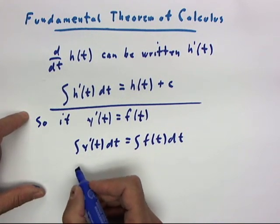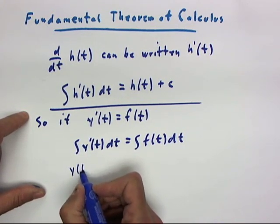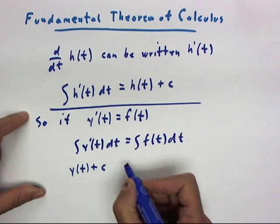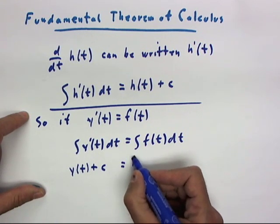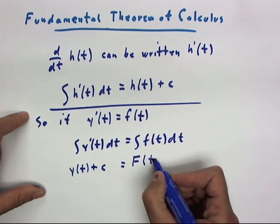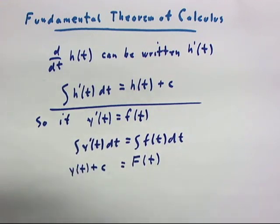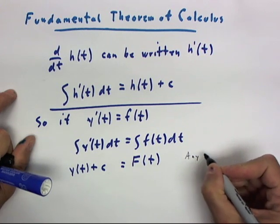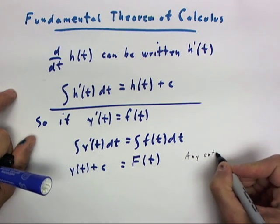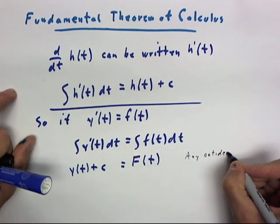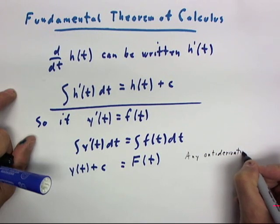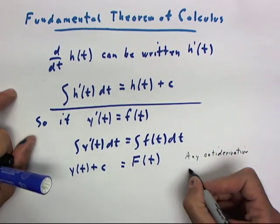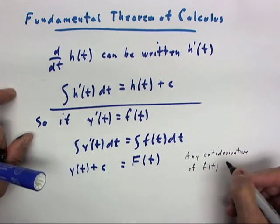And what we obtain on the left side is nothing but our y function plus a constant. On the right-hand side, we're going to get a function capital F of t, where we understand that capital F of t is any antiderivative of little f of t.